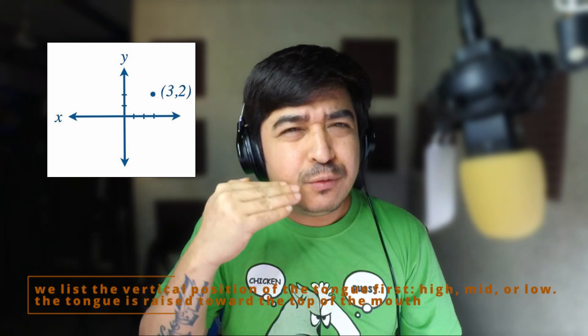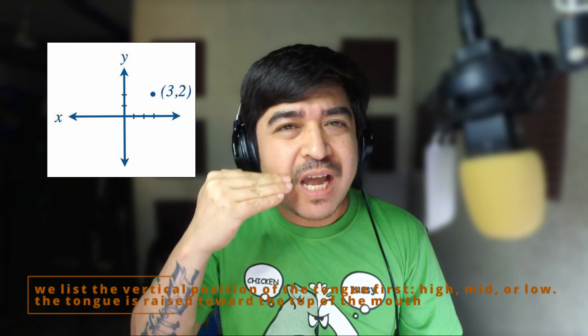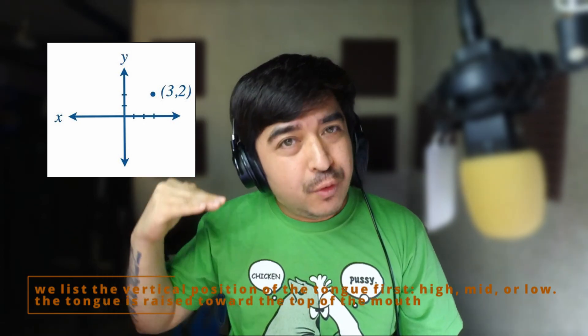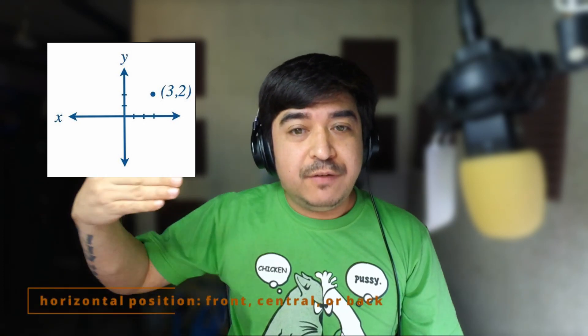Tongue position is very important for vowel sounds. Now, vowel sounds are a bit hard to explain in terms of the position and shape of our tongue. To make it simpler, we'll use a quadrant. The quadrant shows us the horizontal and vertical position where the vowel sound originates. For vertical, we have high, mid, and low. For horizontal, we have front, central, and back.